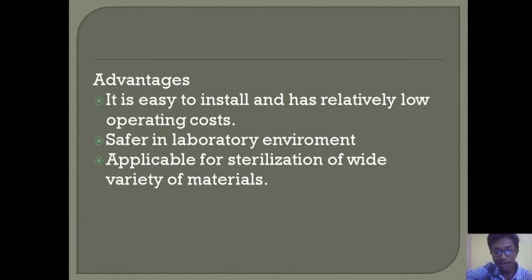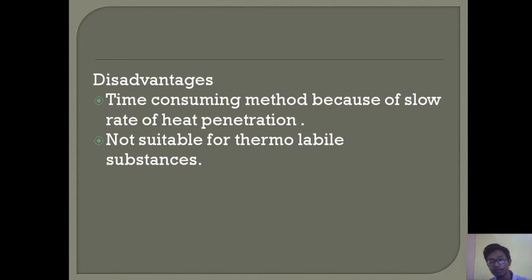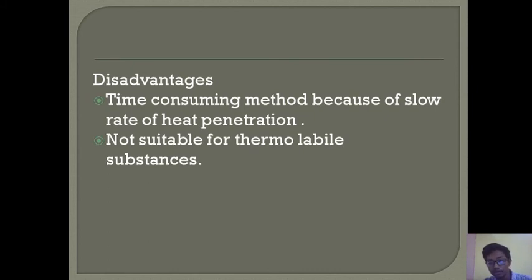Along with the advantages, the hot air oven also has some disadvantages. It is a time-consuming method, requiring up to 2 to 3 hours for complete sterilization of glassware and different kinds of materials. It is not suitable for thermolabile substances — those substances that cannot withstand extreme heat or pressure are called thermolabile substances, and the hot air oven is not suitable for them.